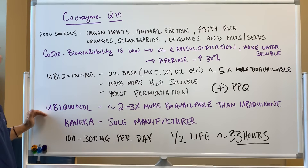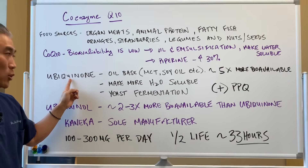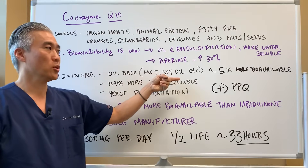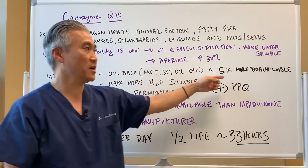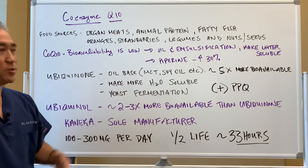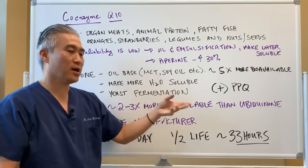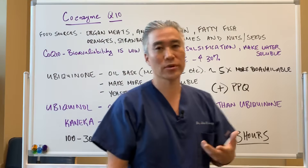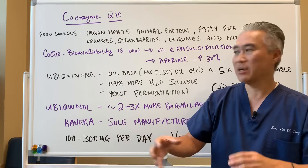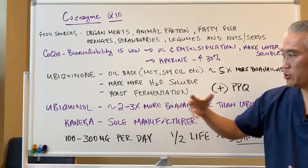There are two forms to talk about here: ubiquinone and ubiquinol. Ubiquinol uses an oil base like MCT or soy oil to increase absorption by five times, or you can make it more water-soluble. Oftentimes it's a yeast fermentation process used to create CoQ10 commercially — they don't really extract it from animals.